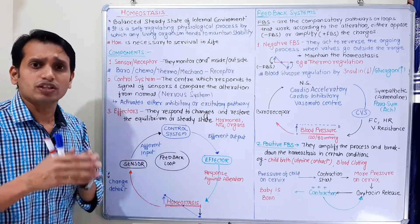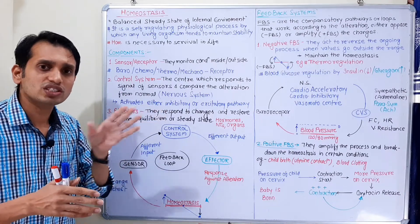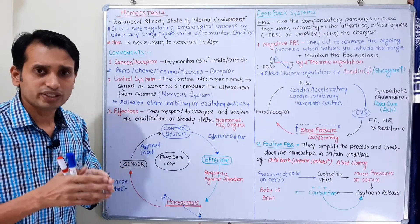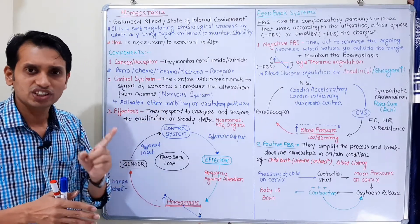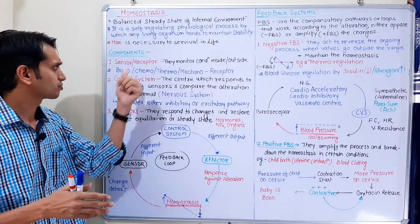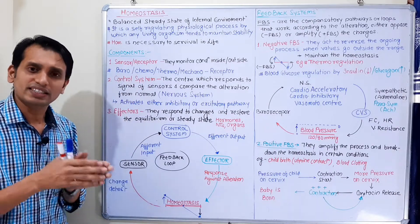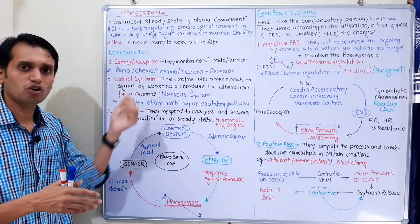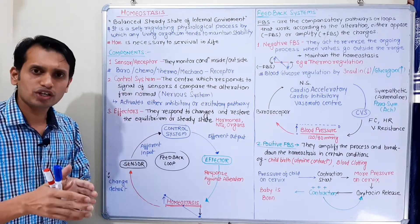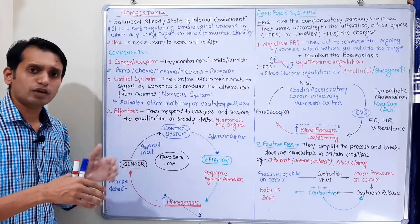Now let's look at the basic components of homeostasis. There are three types of components. First is the sensor or receptor. Second is the control system or control unit or controller. Third is the effectors.